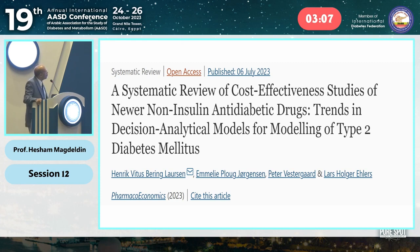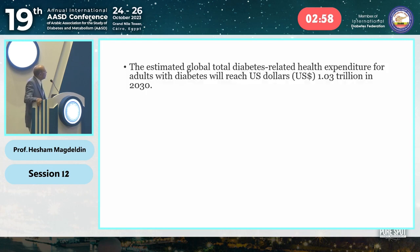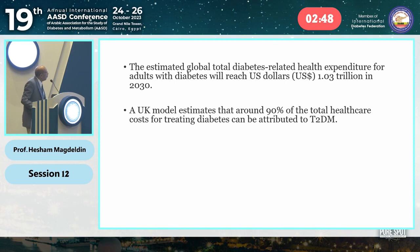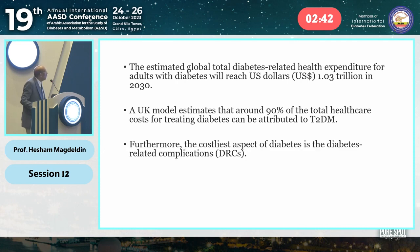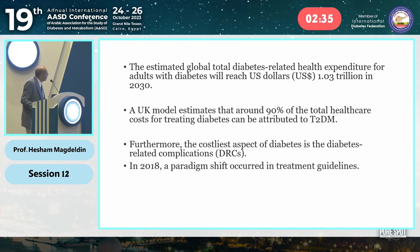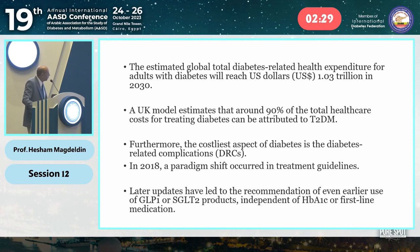A systemic review published in July 2027 examined cost-effectiveness for newer non-insulin anti-diabetic drugs. Global diabetes-related healthcare expenditures have reached trillions. The total healthcare costs will come largely from type 2 diabetes, and the costliest aspects will come from morbidities. Therefore, starting from 2018–2019, a paradigm shift occurred in treatment guidelines, with later updates recommending earlier use of GLP-1, SGLT-2, and DPP-4 inhibitors.